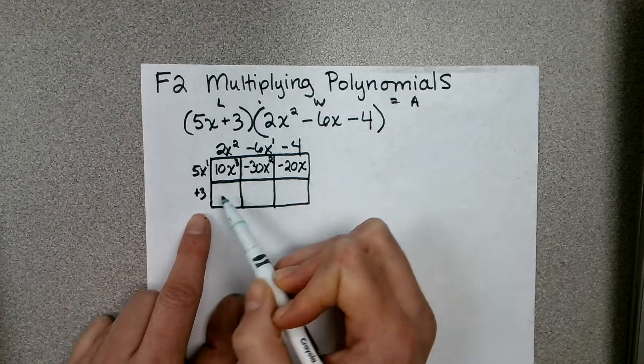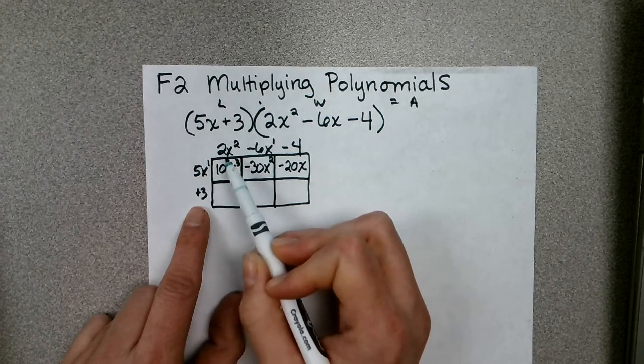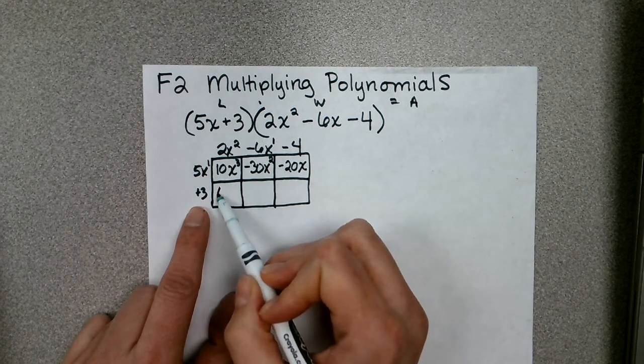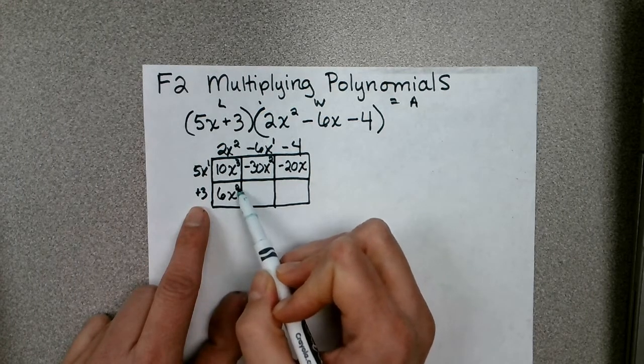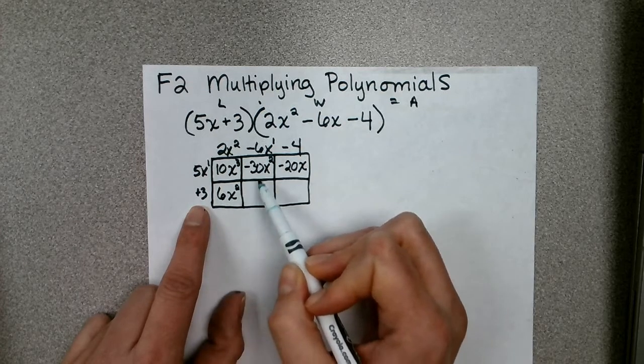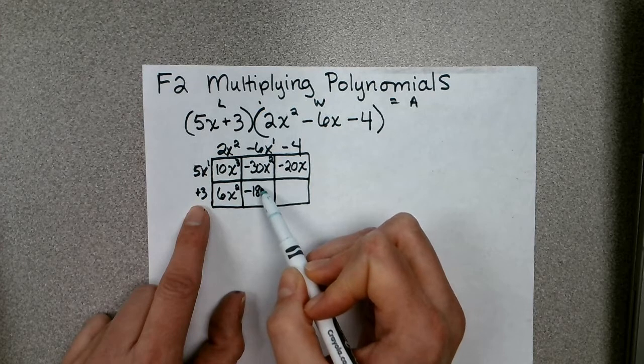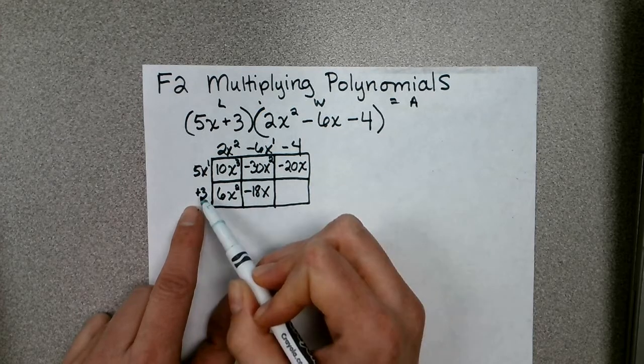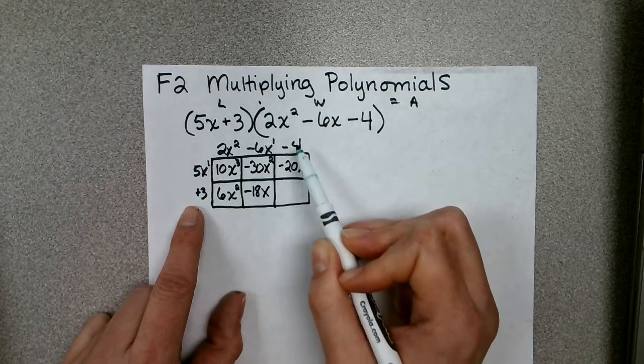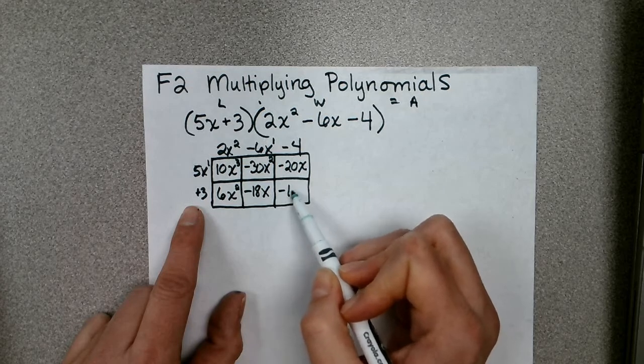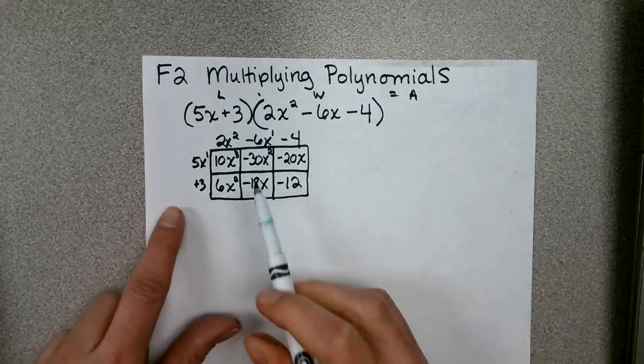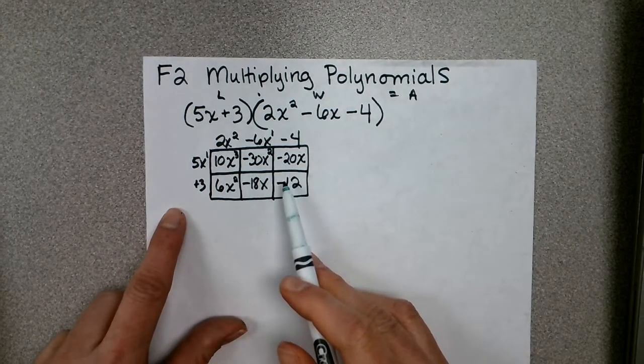Down here, 3 times 2x squared is 6x squared. 3 times negative 6x is negative 18x, and lastly 3 times negative 4 is negative 12. So we found each of the individual areas in our box or in our model.